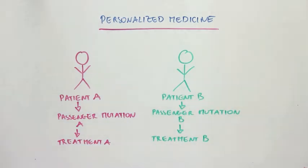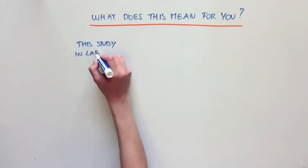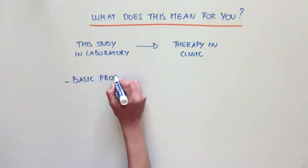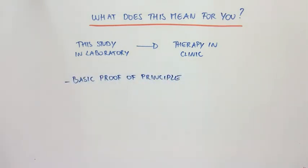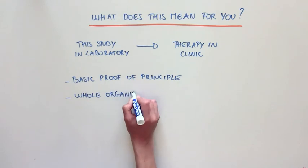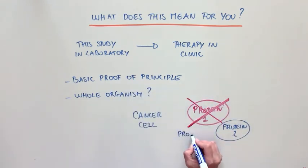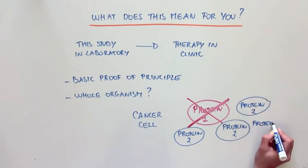Of course, there is still a lot of work that needs to be done before this study can be translated into promising therapies for cancer patients in the clinic. The system that was used in this study provides basic proof of principle to direct potential therapies in humans, but it is still very artificial. For example, it's possible that in a whole organism, the cancer finds a way to increase the protein levels of the other anylase proteins to compensate for the loss of one of the members of the family.